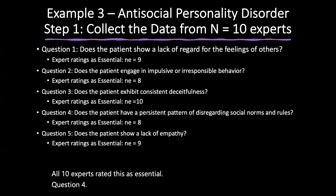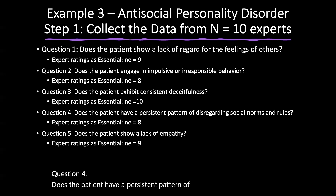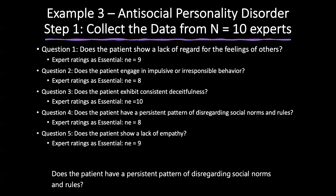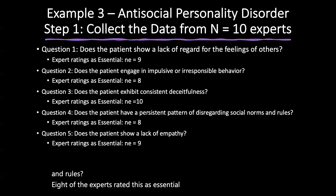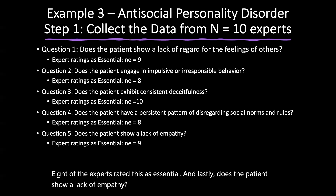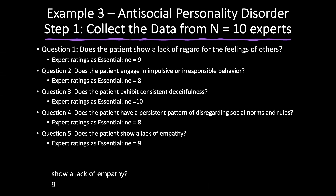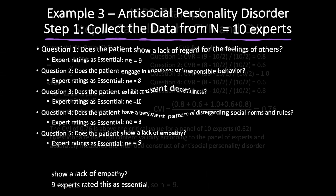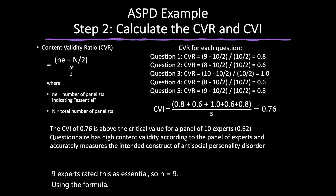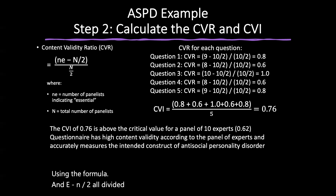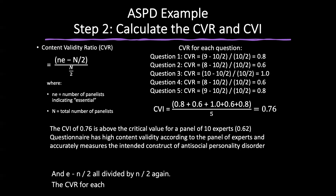Looking at applications to other psychotic disorders such as delusional disorders or schizoaffective disorders: for concurrent validity, a new self-report scale designed to assess delusional disorder could be compared with a clinician's structured interview, where a high correlation would indicate concurrent validity. For predictive validity, a new cognitive assessment aimed at predicting how a patient with schizoaffective disorder might progress in a therapeutic program — if the assessment accurately predicts progress, it shows predictive validity.